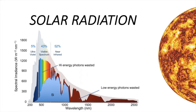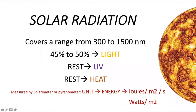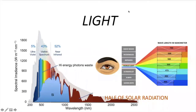Just 45 to 50% of solar radiation represents light. Solar radiation includes more than light — about 40% to 50% is visible light, and the rest is UV and heat. To measure solar radiation, we use energy units: joules per square meter per second or watts per square meter. Light includes all wavelengths visible to the human eye, being about half of total solar radiation, which can also be called global radiation.